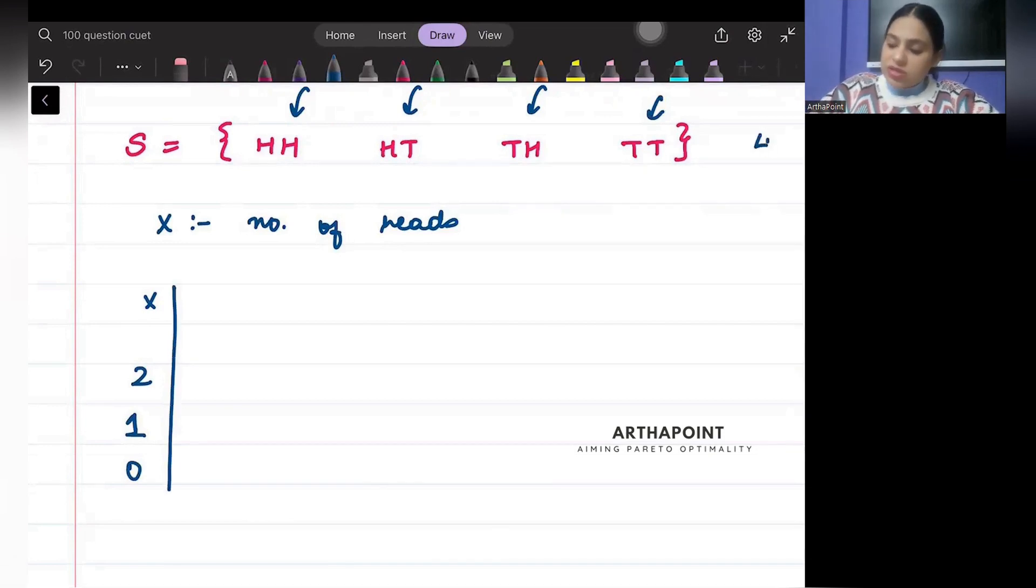In total, beta, there are four cases. Out of which in one case I have two heads, so its probability will be one by four. In two cases I have one head, so its probability will be two by four. There is one case in which I have zero heads, so one case out of four.